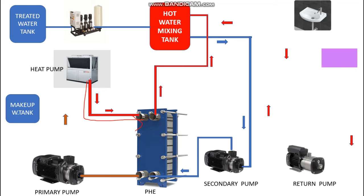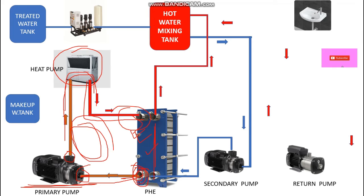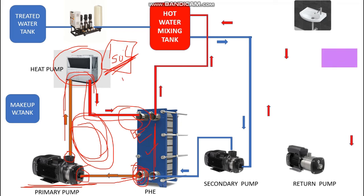The hot water that entered from the heat pump outlet has given its heat to the cold water, so the temperature of this water at the leaving side of the PHE decreases. It then connects to the suction of the primary pump. The primary pump takes this water from the outlet of the PHE and feeds it back to the heat pump to make it hot again. The heat pump maintains this water temperature up to the temperature setting — for example, 50°C. The cycle repeats until 50°C is reached, at which point the compressor goes into rest condition.